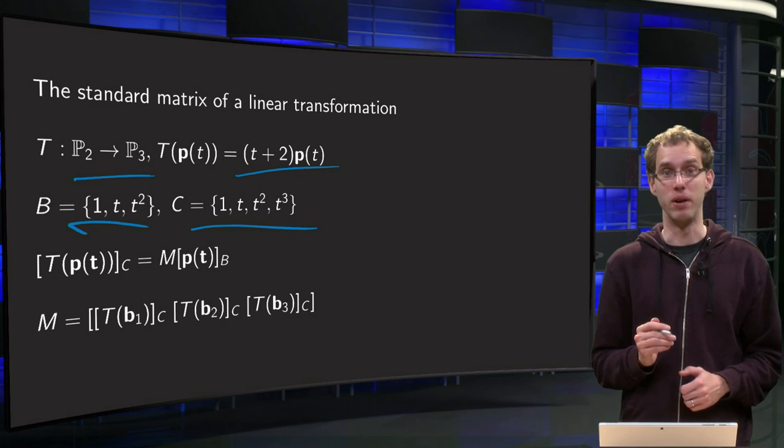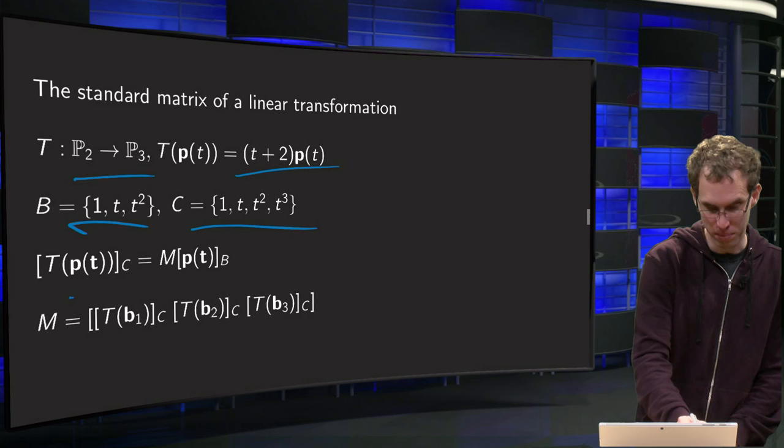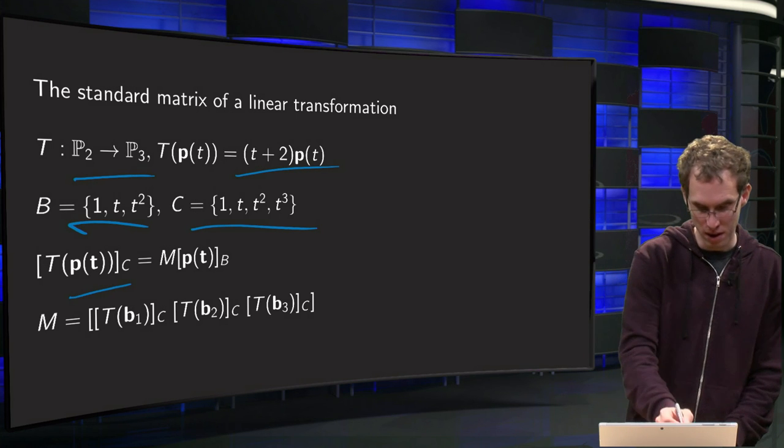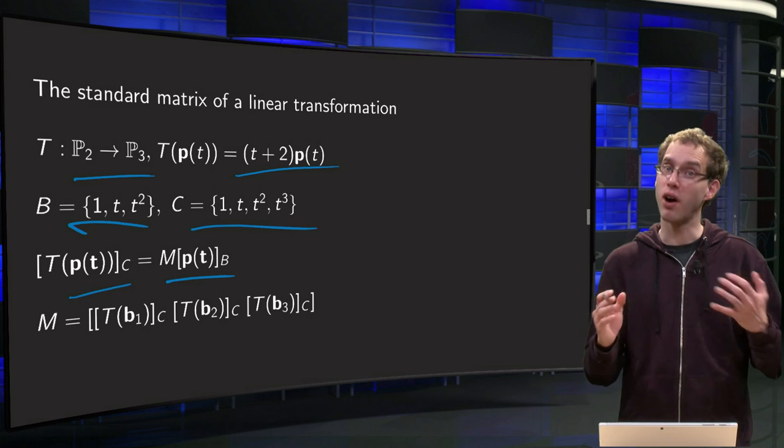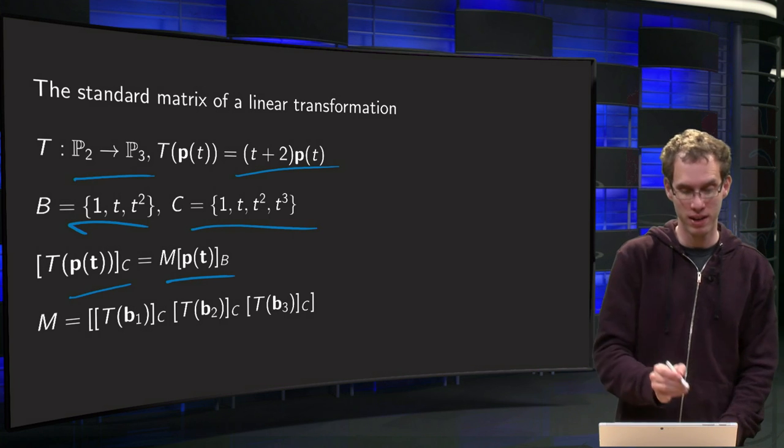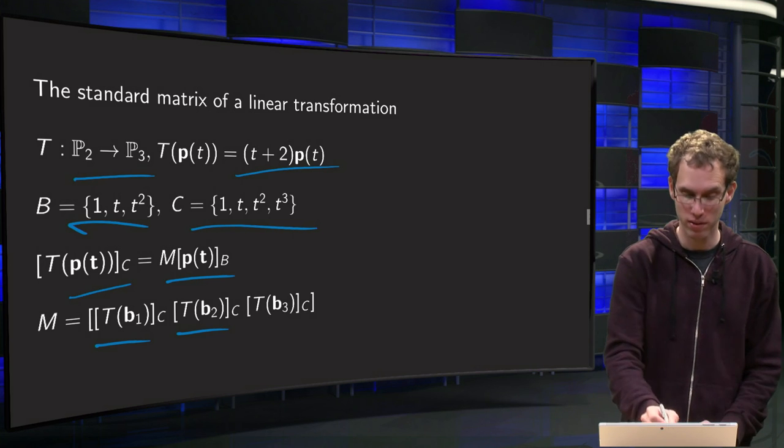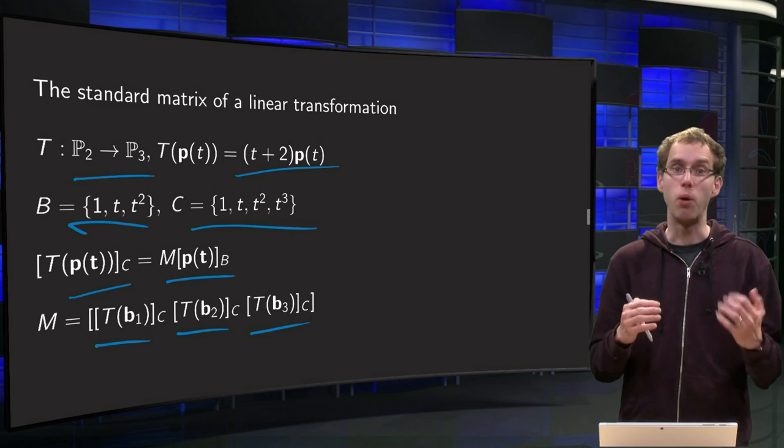Then we know that our T(p(t)) in the basis C is given by some matrix M times p(t) in the basis B. And we know how to find our matrix M. It is [T(b₁)]_C, [T(b₂)]_C, and [T(b₃)]_C.